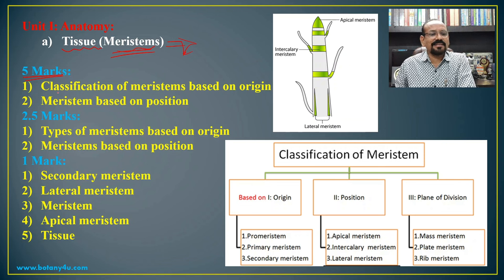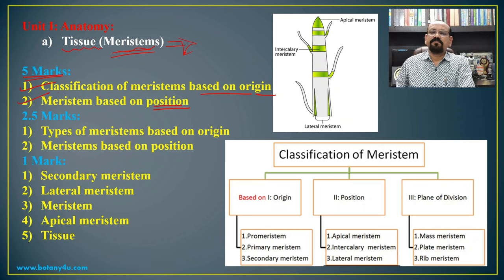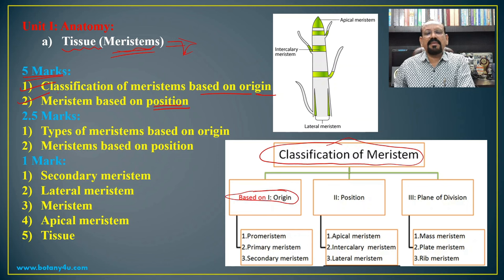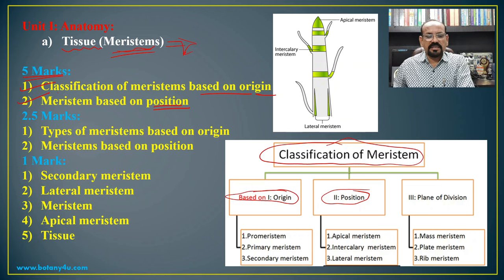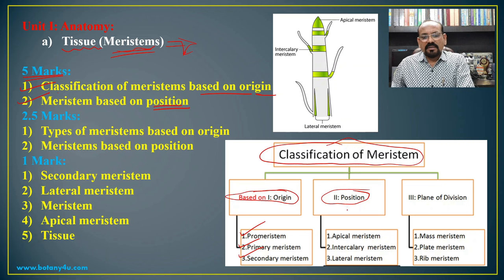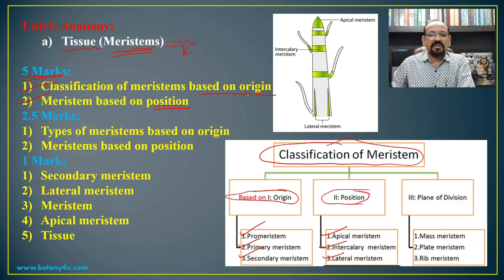On meristems, two types of questions were earlier asked for 5 marks: classification based on origin, and classification based on position. Based on origin, there are three types: promeristem, primary meristem, and secondary meristem. Based on position, there are three types: apical meristem, intercalary meristem, and lateral meristem.